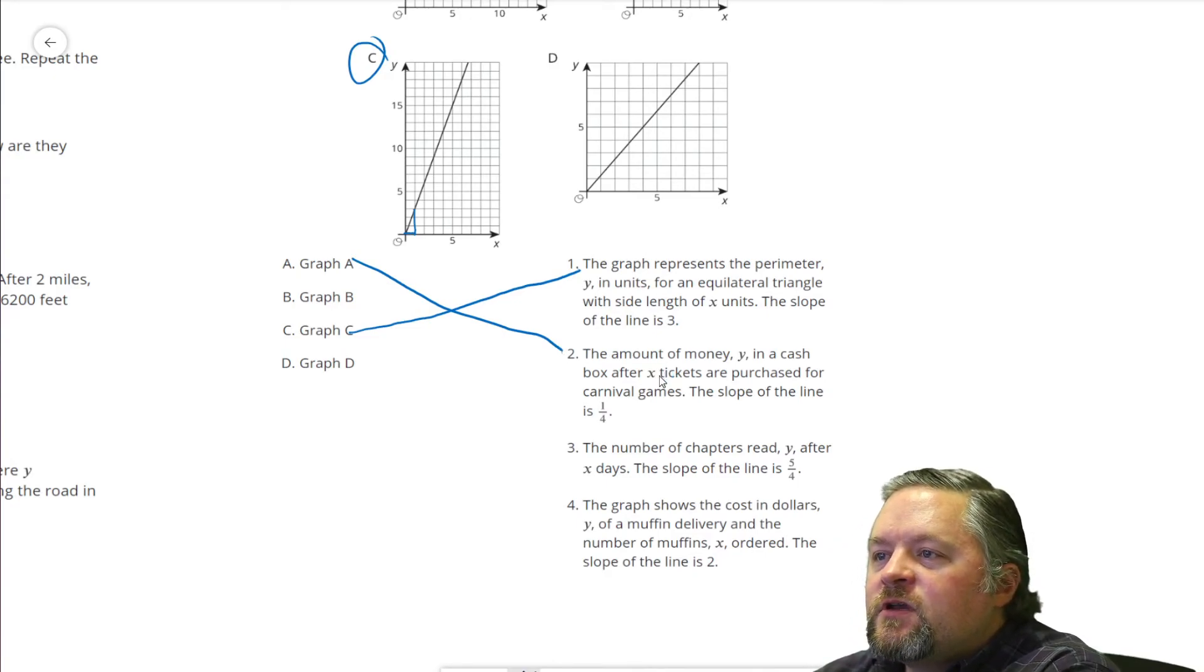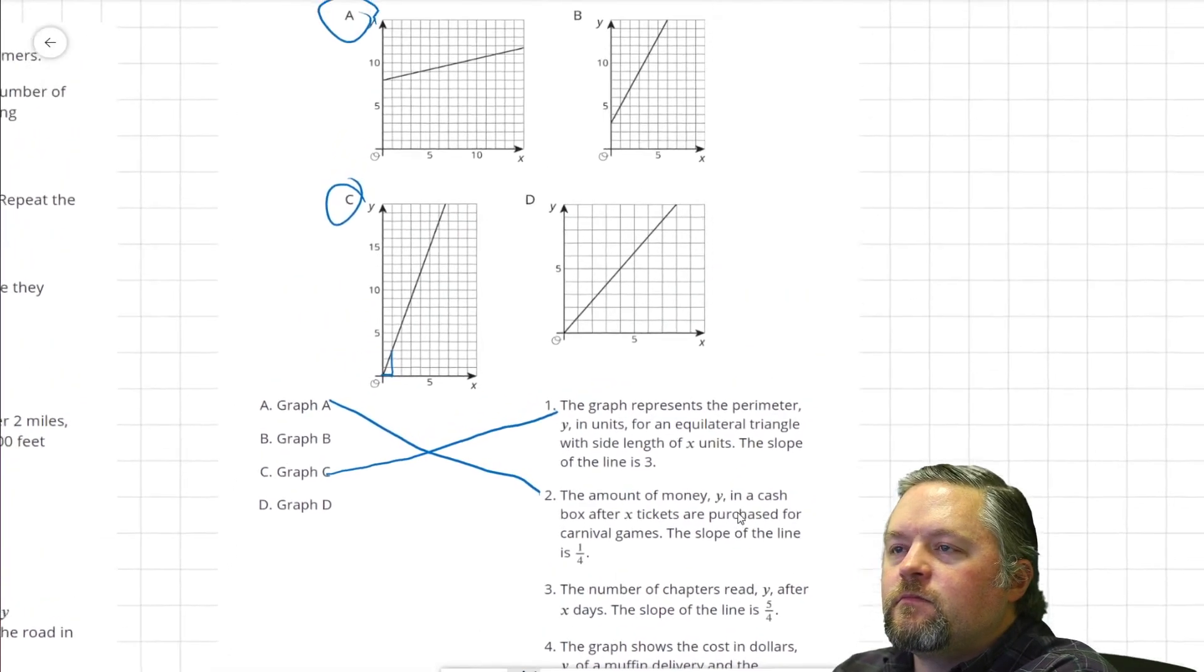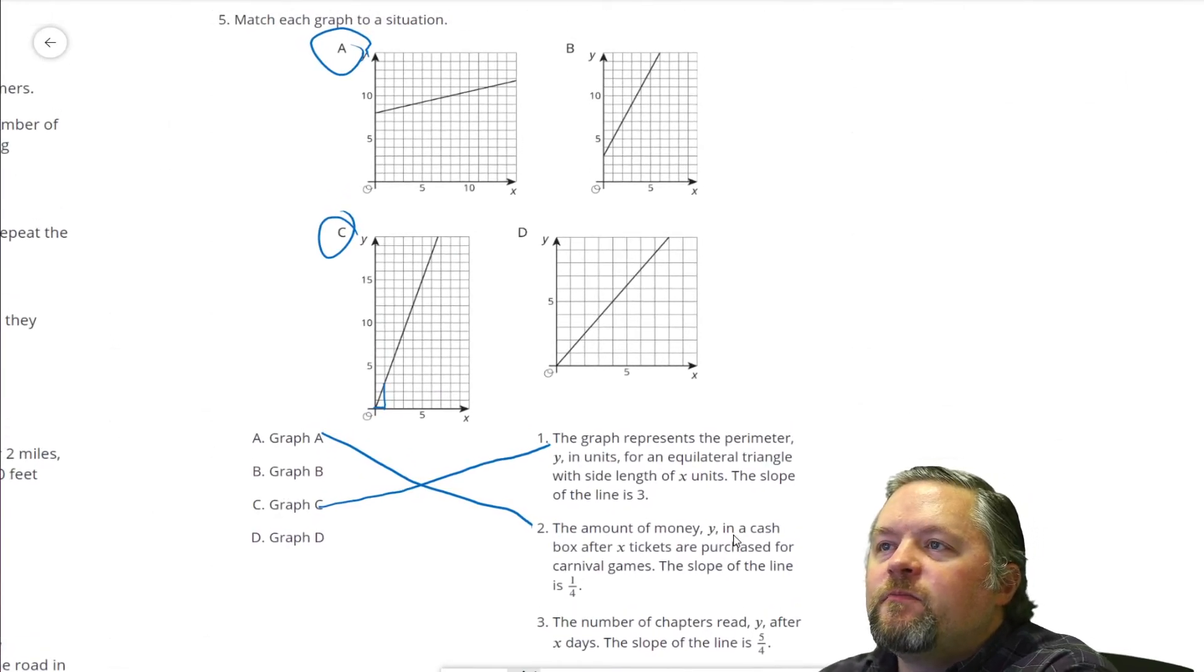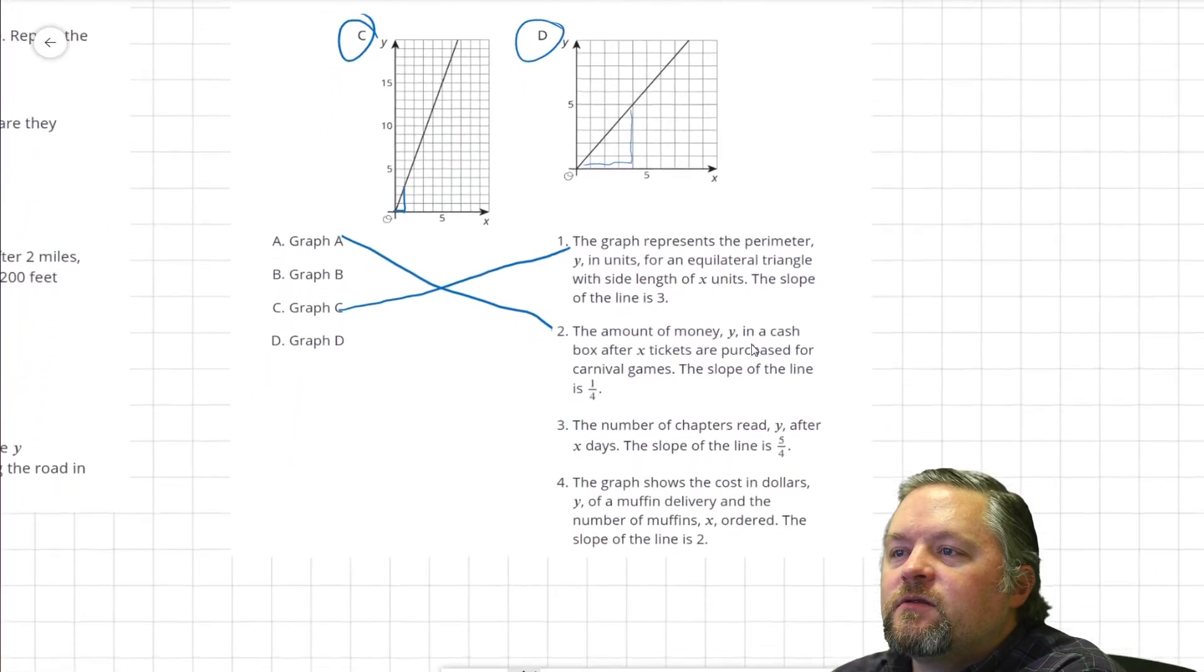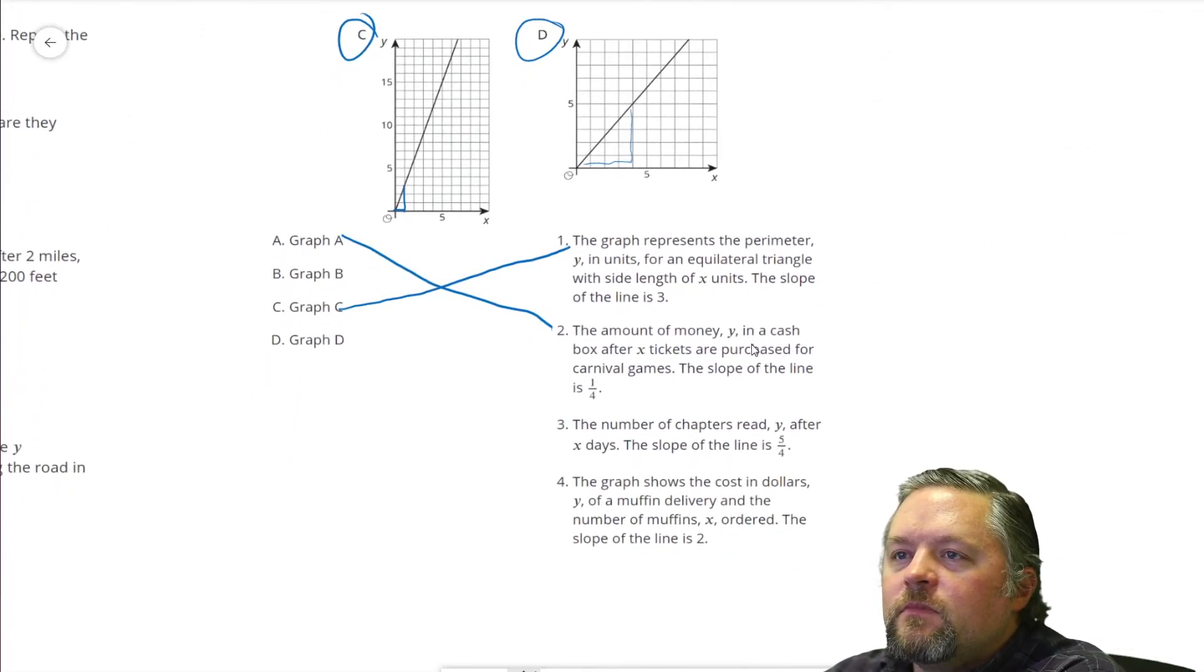Okay, next one. Number of chapters read, Y, after X days. The slope of the line is 5 over 4. Slope 5 over 4. We go up 5 over 4. Let's look at D here. Up 5 over 4. So, that's going to be this one. So, D goes with number 3.